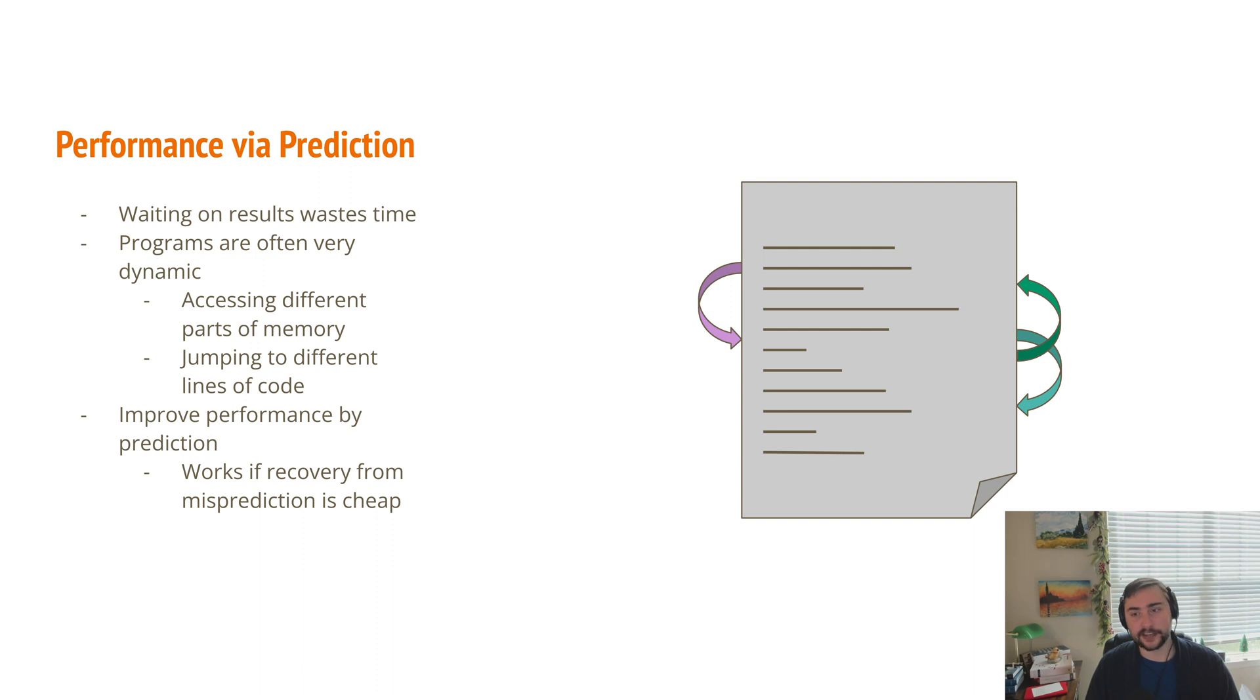And we also end up jumping around a lot inside of our programs. So we don't execute our programs like we would read a book. We don't go from top to bottom. We're often jumping around as we call functions and as we have different branches and execute conditional statements. Because of this, we can often get a lot of performance by trying to predict what our program is going to do. So predict what kind of memory or what piece of memory we're going to access and predict which code we're going to execute next. This can work very well in terms of improving performance, provided that our recovery mechanism, so in case we mispredict, provided whatever recovery mechanism we have from that, isn't prohibitively expensive. We need to make sure that on average we're still improving performance and we're not wasting all of our time cleaning up after our own mistakes.